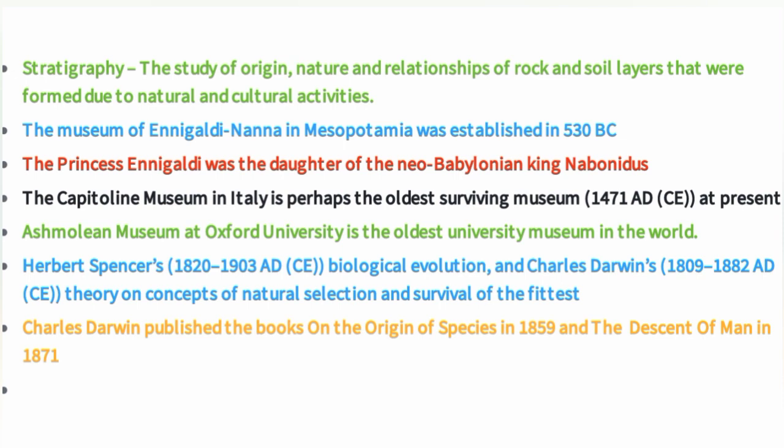The museum of Enigaldi in Mesopotamia was established in 530 BC. It was founded by Enigaldi, daughter of the Neo-Babylonian king Nabonidus.